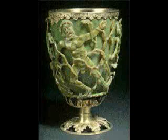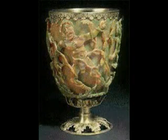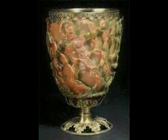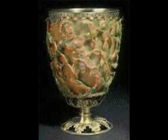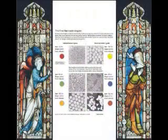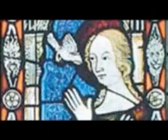Evidence of the first use of nanoscale properties was found in Roman artefacts like the Lycurgus cup. This cup is made with glass incorporating gold nanoparticles, which result in a colour change from green to red depending on the angle of light. The colour effects of nanogold are also evident in stained glass windows.